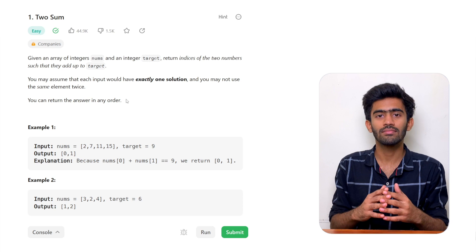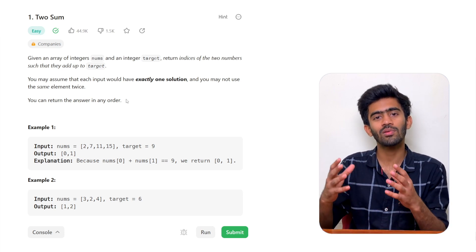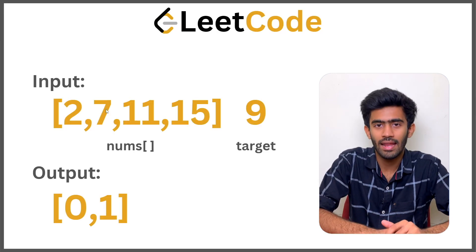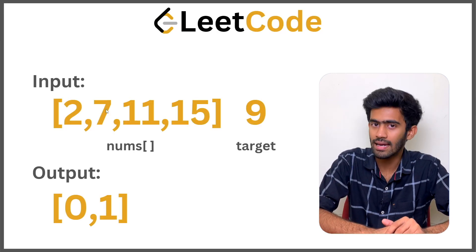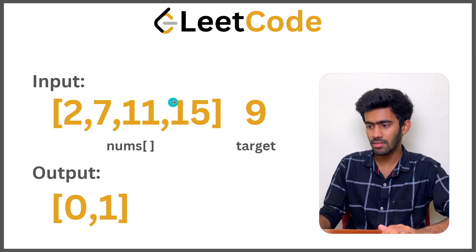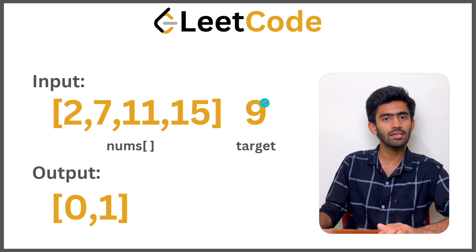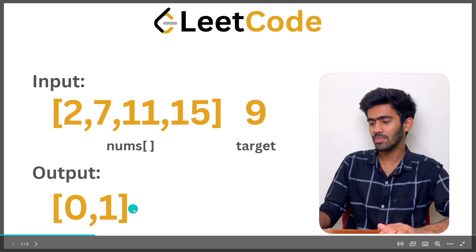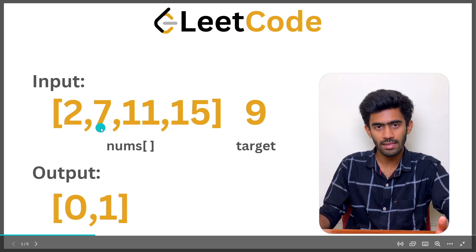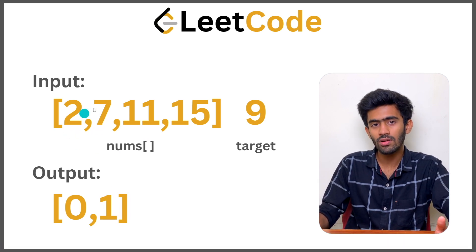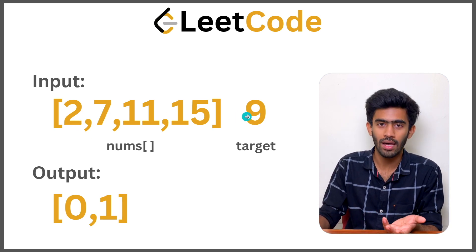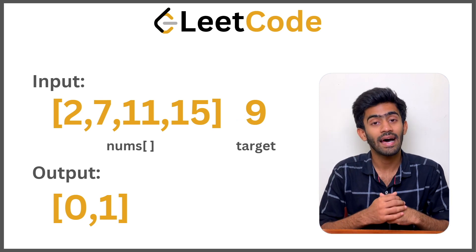Let's take an example to find the algorithm. We have an array of integers [2, 7, 11, 15] and the target integer is 9. The output must be [0, 1]. Why? Because index 0 has 2 and index 1 has 7. Summing up indices 0 and 1, we get 2 plus 7 which gives us our target of 9, and that's our answer.